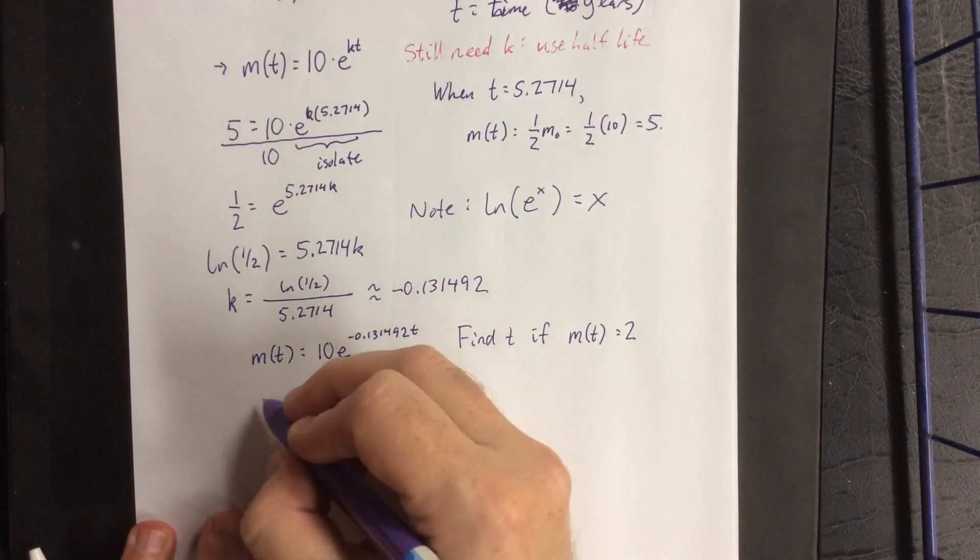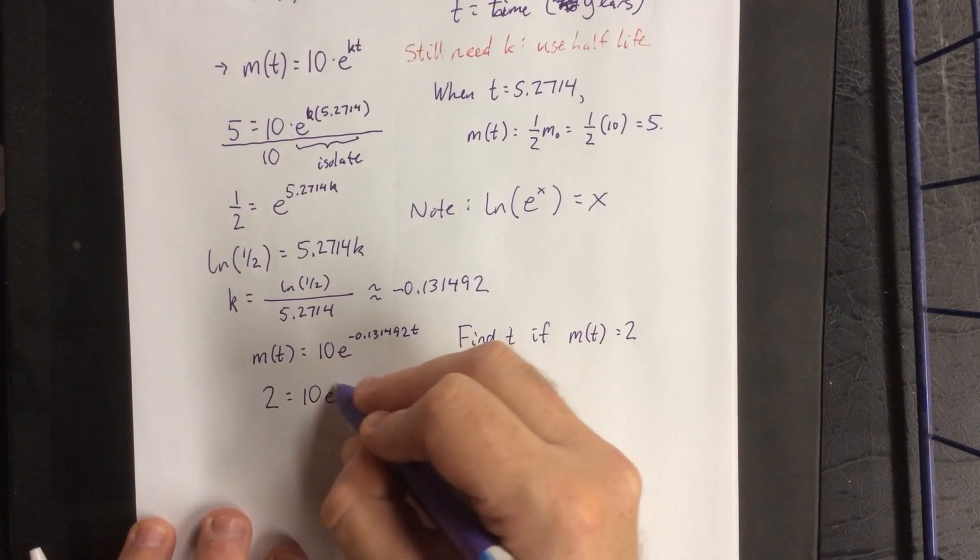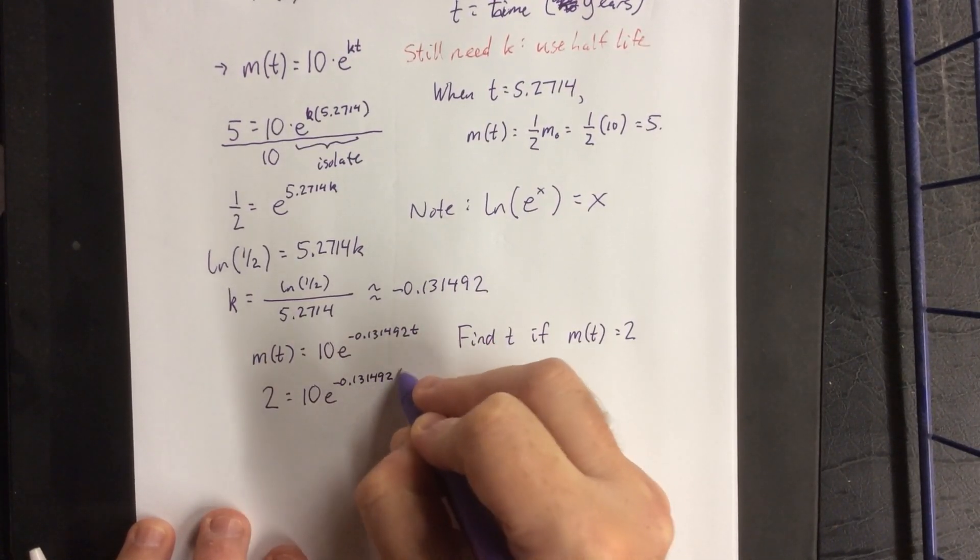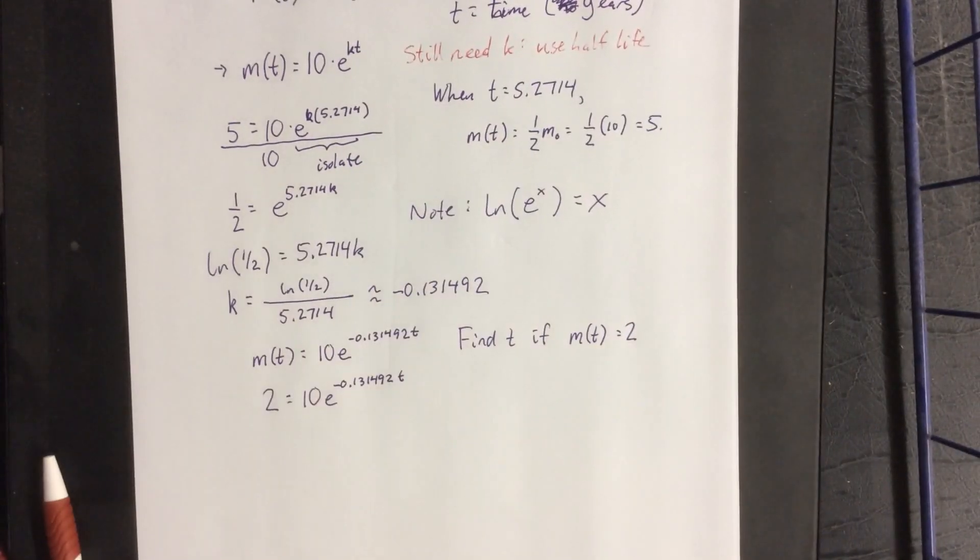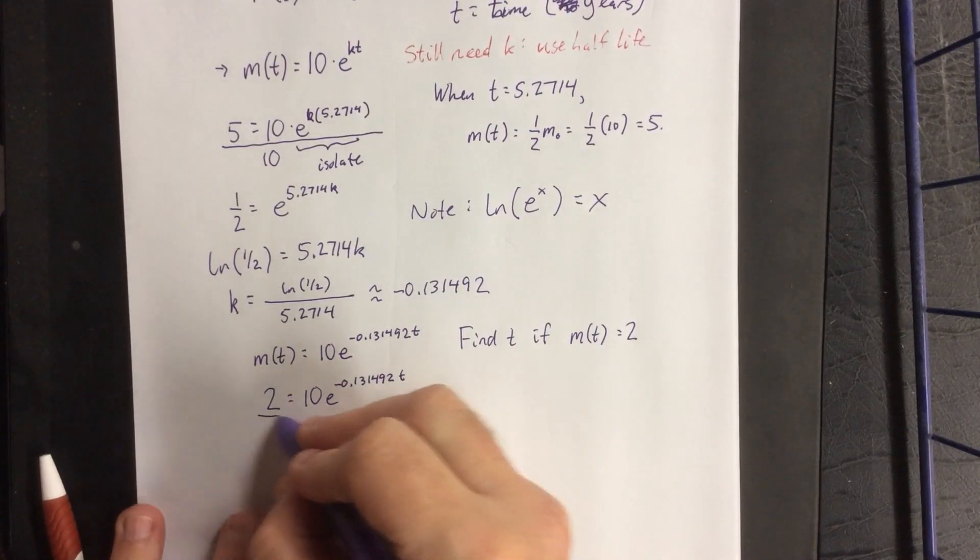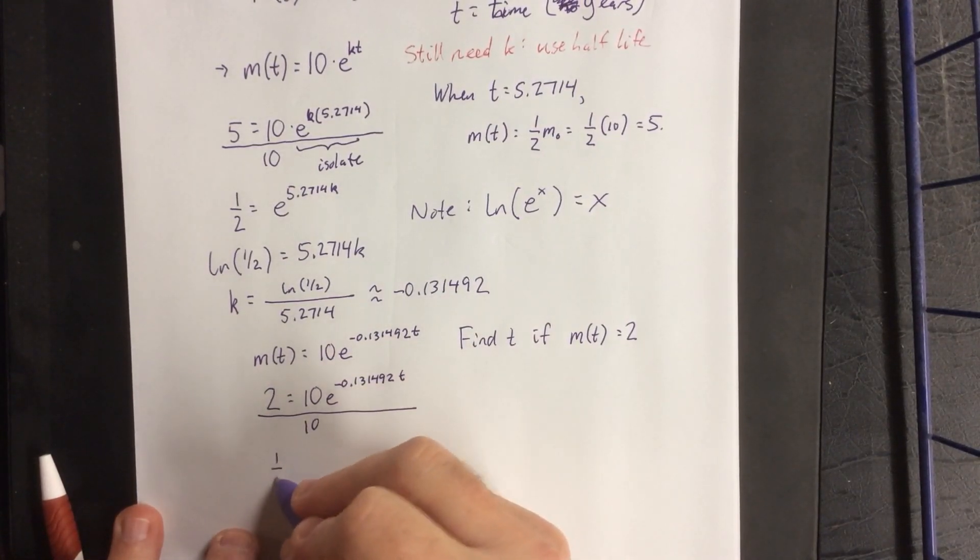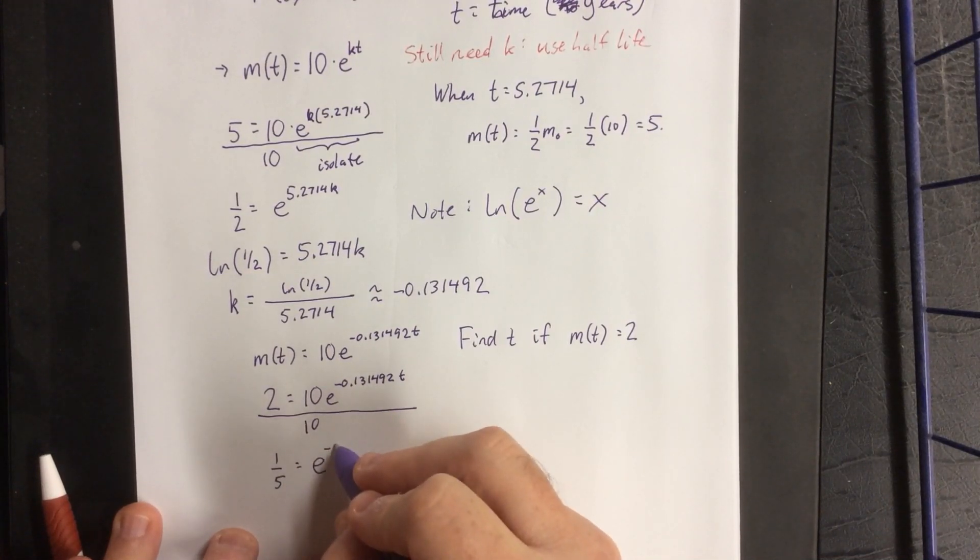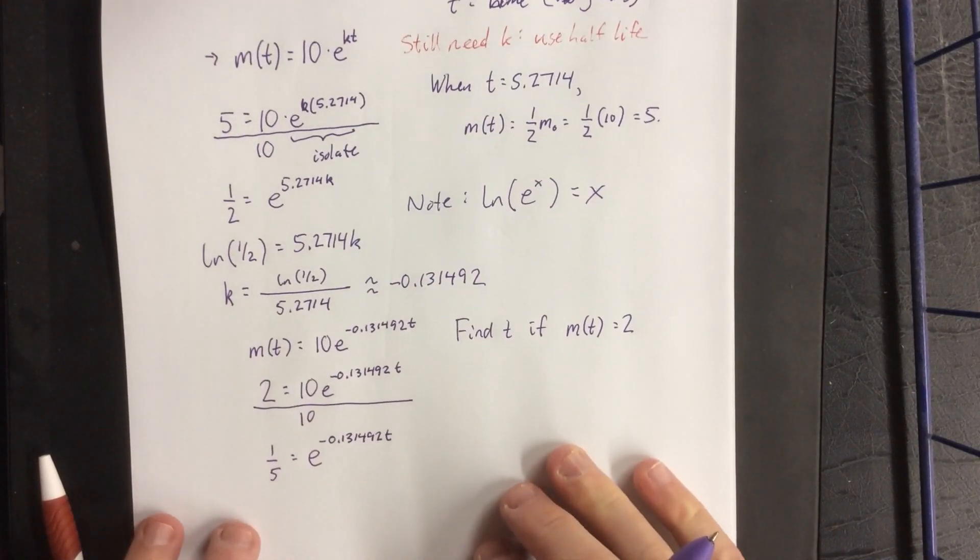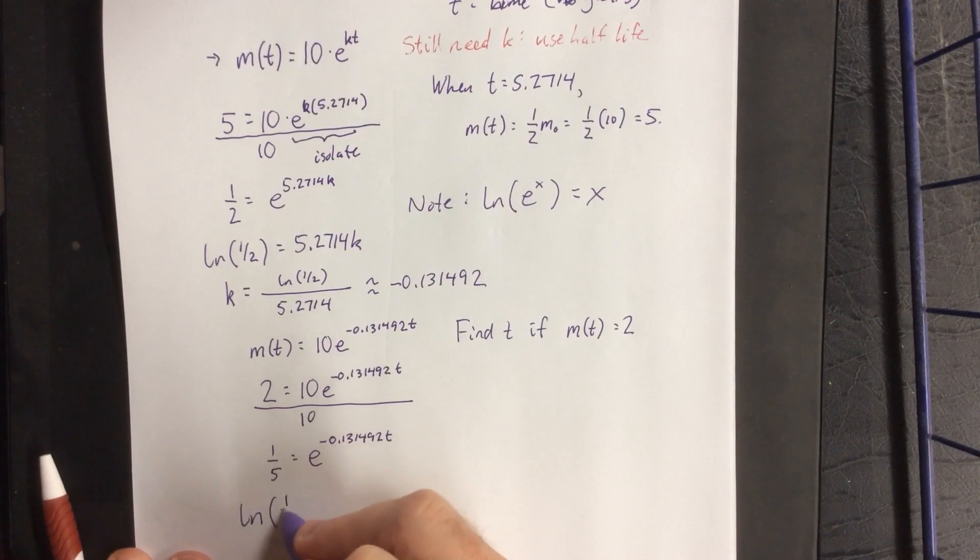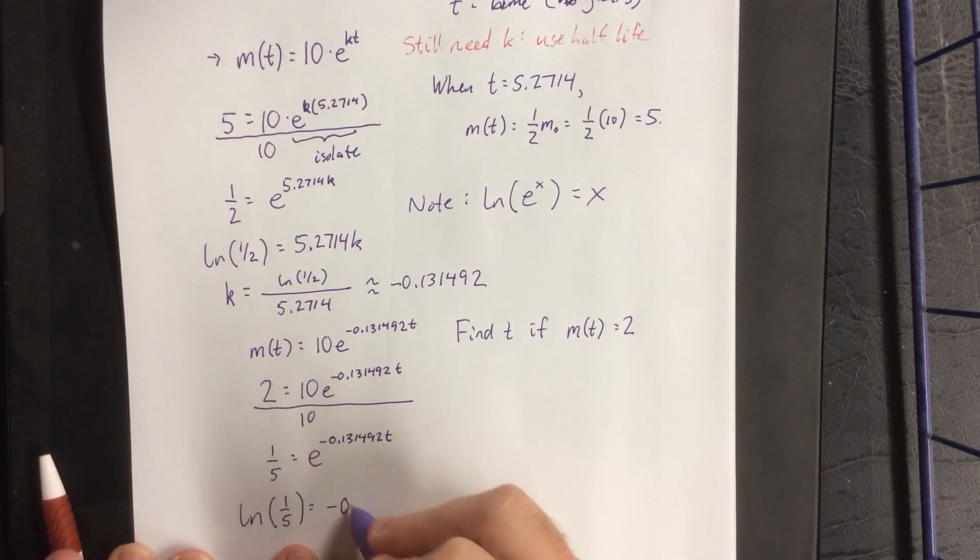So what I'm going to do is plug in mass is 2, and I'm basically going to run through the exact same algebraic procedure that we just went through to solve for k. First we'll isolate the exponential term. After we isolate the exponential term, we'll take a natural log of both sides. We get 1 fifth is equal to e raised to the negative 0.131492t power. Take a logarithm of both sides. We get the natural log of 1 fifth is equal to, now just the exponent.